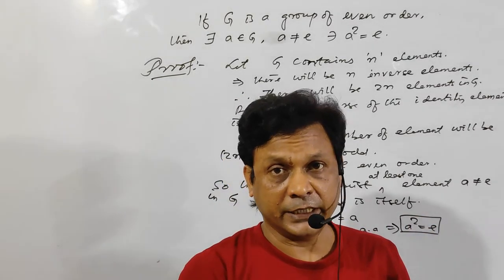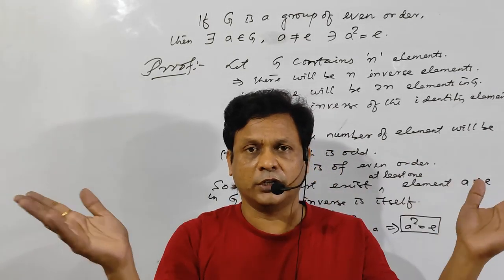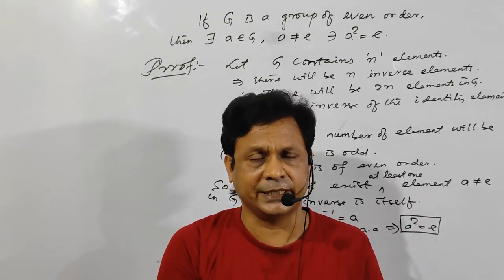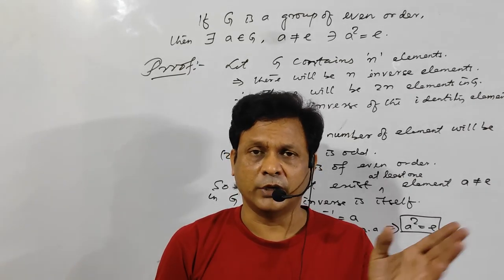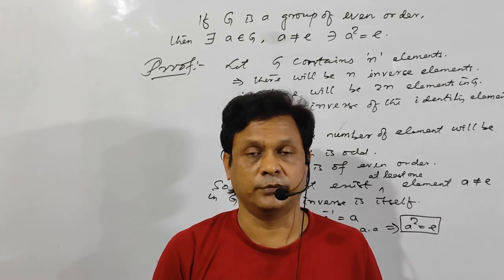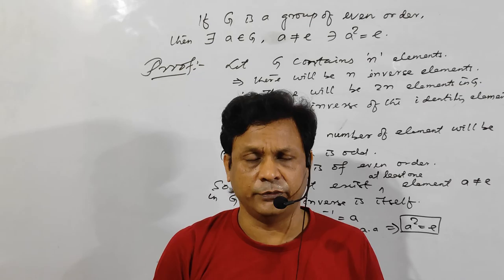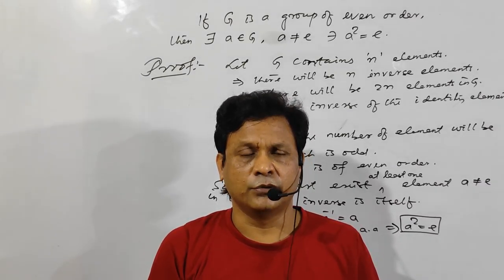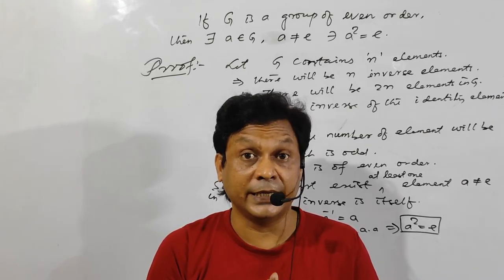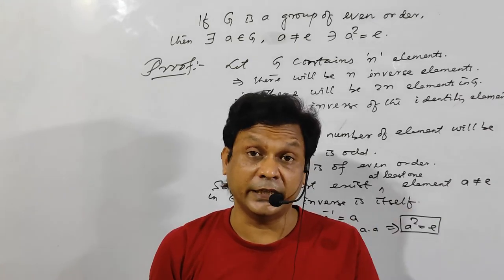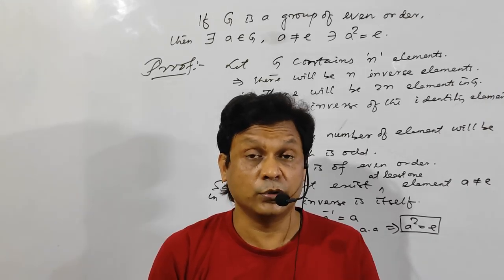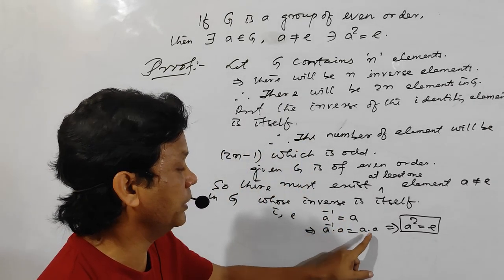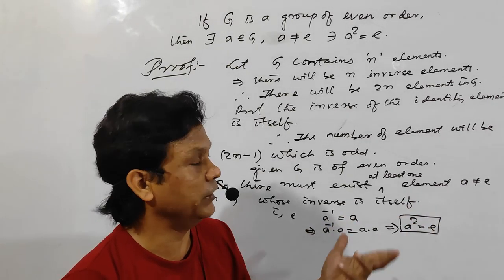So again: there are n elements, and for n elements there are n inverse elements, so the total becomes 2n. But in a group, the identity element is present, and the inverse of the identity element is itself. So the total number of elements is 2n minus 1, which is an odd number. But G is of even order. To make it even, at least one more element must be reduced. Since we reduced from 2n to 2n minus 1 because identity is its own inverse, similarly, other than e, there must exist an element a in G whose inverse is itself. So that one element is reduced, and as a result G will have even order. Taking a whose inverse is a — multiply a to both sides — a inverse times a equals e, and a times a equals a squared, so a squared equals e. This is the proof.